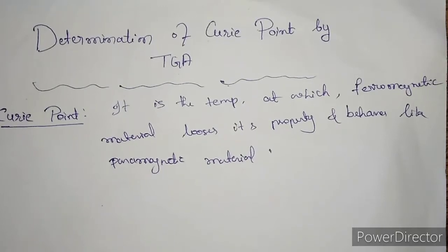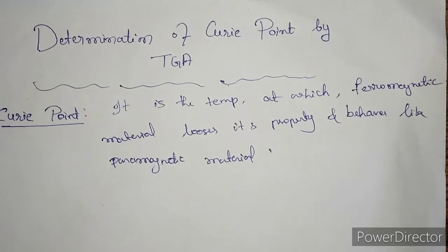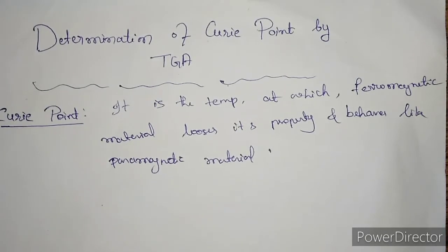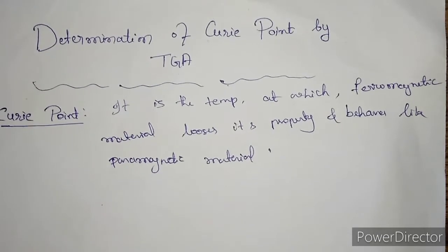Hello students, welcome to my channel. In this video, we will study how we can determine the Curie point or the Curie temperature by means of TGA. TGA is the thermal method in which we can determine the change in the weight of the sample as a function of temperature.